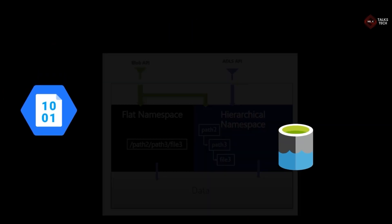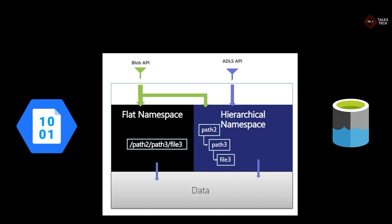What is hierarchical namespace? The left side of the diagram shows the Blob API, which follows flat namespace — essentially a single-level structure where a file comes from a flat path. On the other side, the ADLS API (Azure Data Lake Storage) follows hierarchical namespace, which is similar to the directory structure in Windows: you have a folder, inside it you can create multiple sub-folders, and inside those folders you can have multiple files. Bringing this hierarchical capability to blob storage makes Azure Data Lake Gen2 very powerful, which is why it is mainly used for analytical workloads.